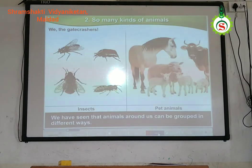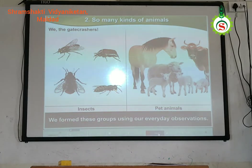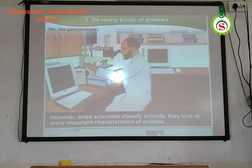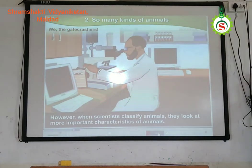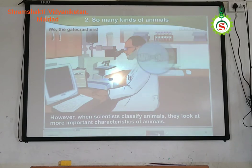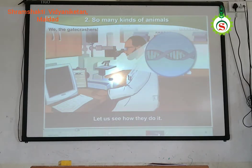We have seen that animals around us can be grouped in different ways. We find these groups using our observation skills. However, when scientists classify animals, they look at more important characteristics of animals. Let us see how they do it.